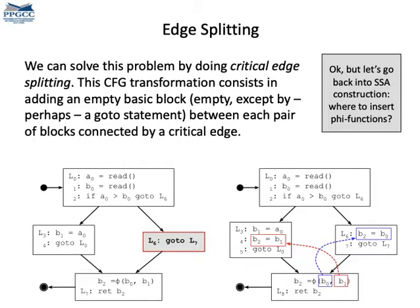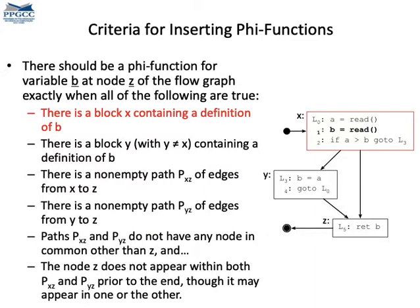Now let's go back into the problem of inserting phi functions in the program. Where to insert these phi functions? There is a list with six properties that must be true to force insertion of a phi function in the program. We shall explain these properties using this program on the right. The question is, when should we insert a phi function for variable b at basic block z? First, b must be defined somewhere, say, in a basic block called x. That's our first requirement here. And it needs to have at least one more definition in the program. A variable that has only one definition will never need phi functions. Can you think about why that's it?